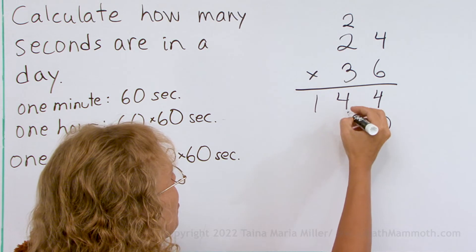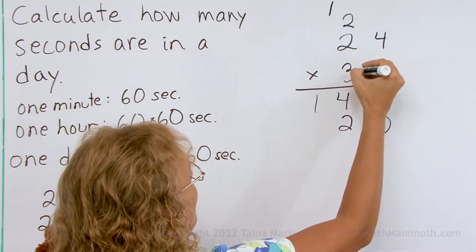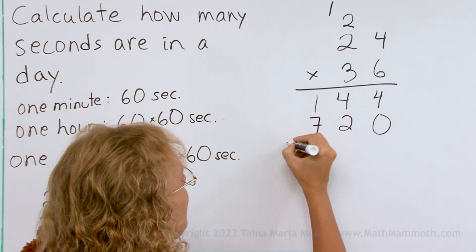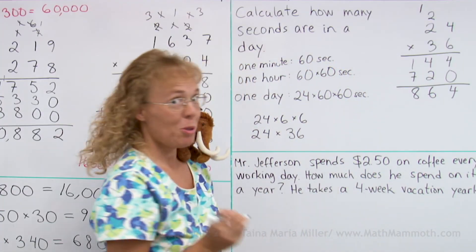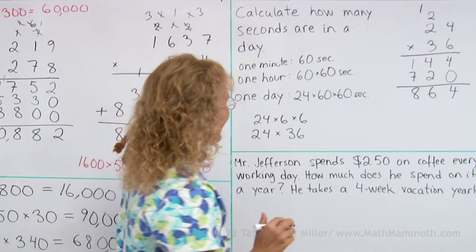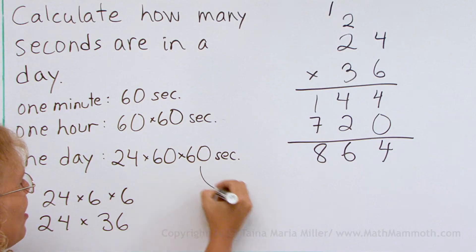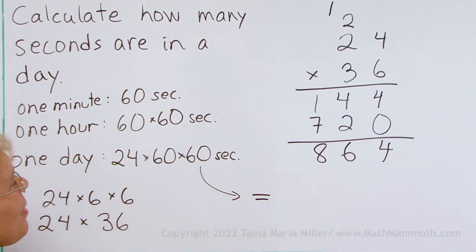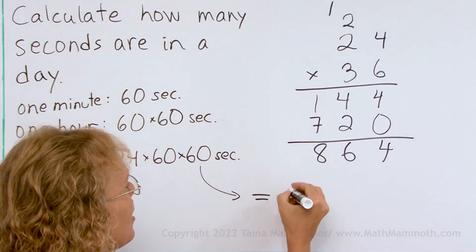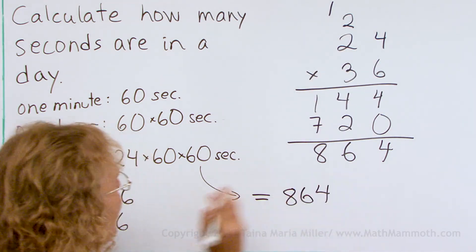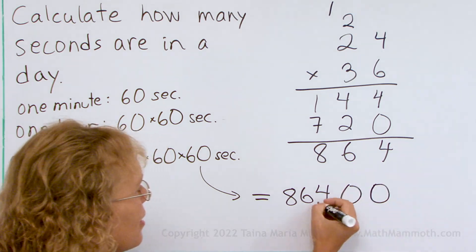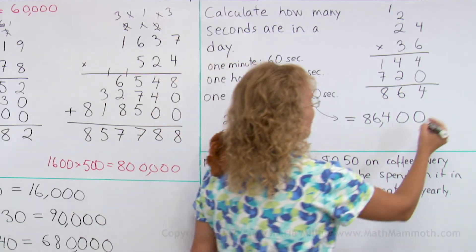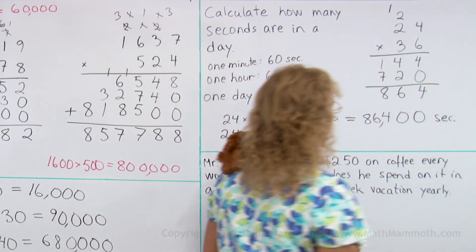Working through 24 times 36: 6 times 4 is 24, carry the 2, giving 14; 3 times 4 is 12, then 6 plus 1 is 7. So 24 times 36 equals 864, and adding the two zeros gives us 86,400 seconds in a day.